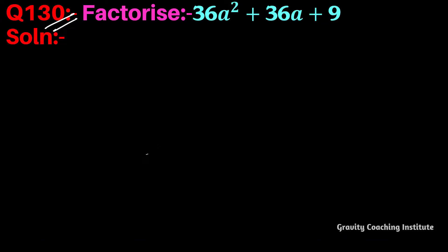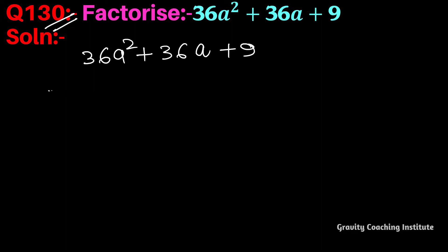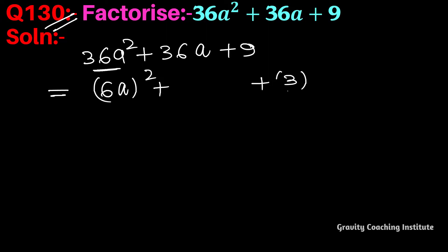Question number 130: factorize 36a² + 36a + 9. We know that 36 is the square of 6, so we have (6a)² plus 9, which is 3 squared, and the middle term is 2 into 6a into 3.